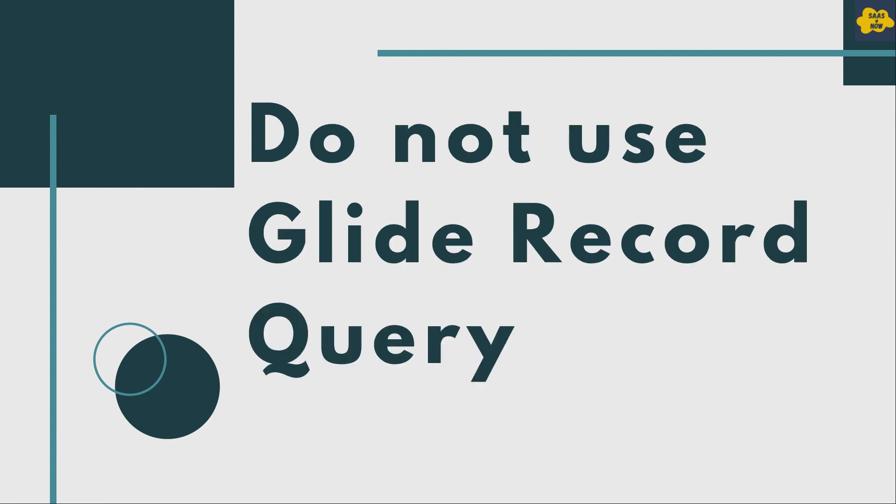Do not use GlideRecord Query in client scripts. It is always recommended not to use GlideRecord Query in a client script. If you have to perform a server call from the client, then you can use the getReference method with a callback function. There are other APIs as well — like G_scratchpad or GlideAjax — to call server-side code and fetch data on the client.